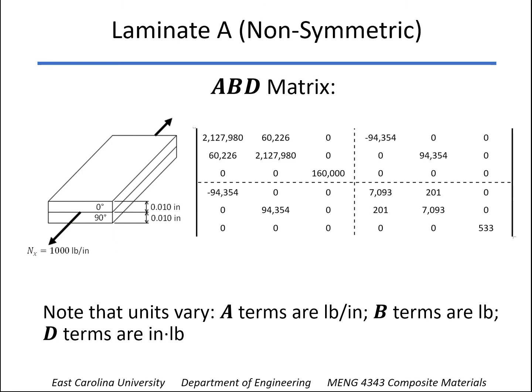So for the non-symmetric one, here's what the ABD matrix comes out to be. And again, I don't show units on that because they're different. In the A matrix, these are pounds per inch. These units are pound. These units in the D matrix are inch pounds. But you can see non-symmetric means we do have some properties here in the B matrix.